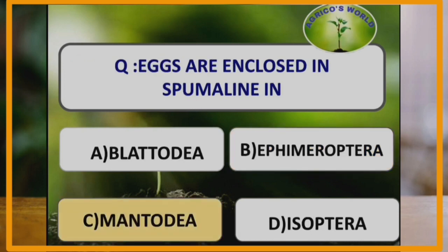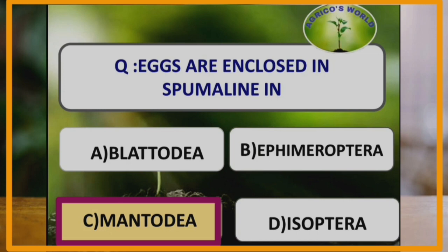Eggs are enclosed in spumalin in Mantodea. Spumalin is an air-filled solidified form in which eggs are enclosed.